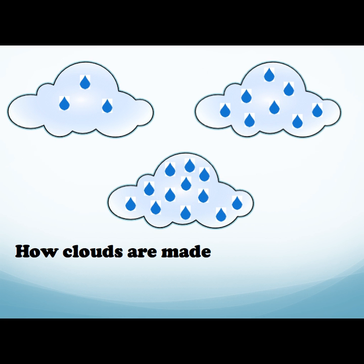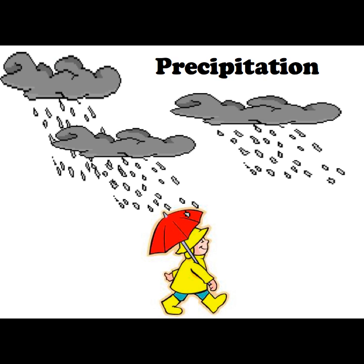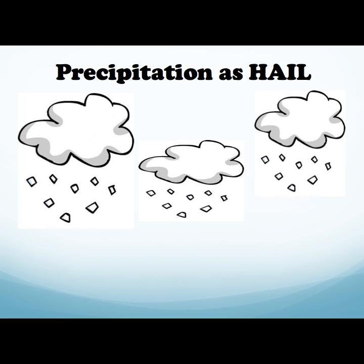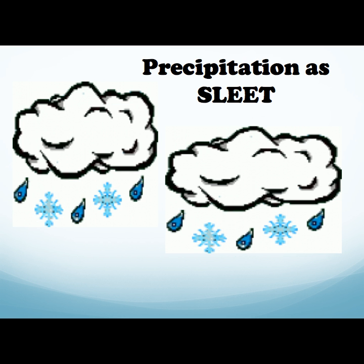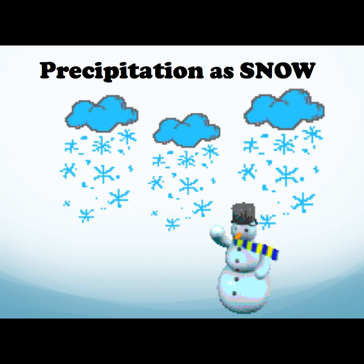Pretty soon the clouds become so full that they can't hold any more water. This is when precipitation occurs. Precipitation is when the water in the clouds falls from the sky as rain, hail, sleet, or snow.